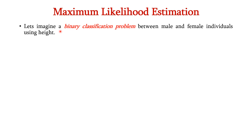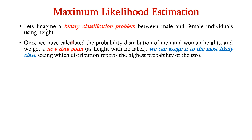Now let us imagine a binary classification problem between male and female individuals using height. Once we have calculated the probability distribution of men and women heights and we get a new point as height with no label, we can assign it to the most likely class, seeing which distribution reports the highest probability of the two.